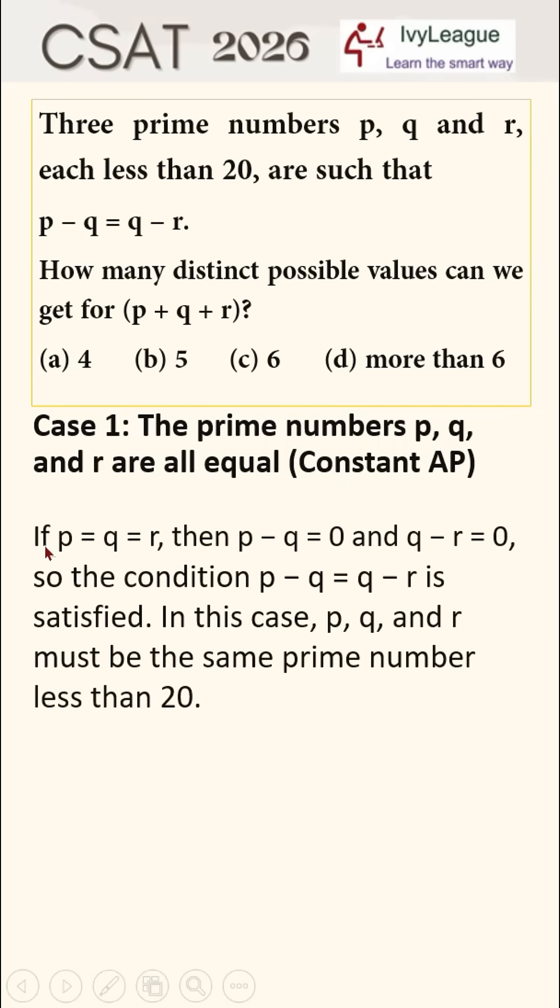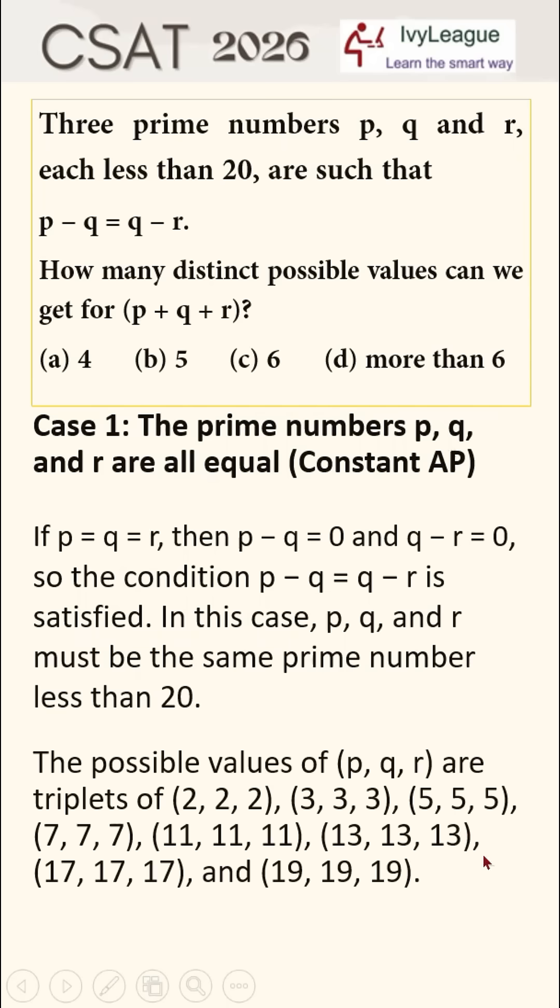If p is equal to q is equal to r, then p minus q will be equal to zero and q minus r equal to zero, so the condition p minus q is equal to q minus r is satisfied and met. In this case, p, q, and r must be the same prime number less than 20. The possible values of p, q, and r are triplets of 2, 3, 5, 7, 11, 13, 17, and 19.